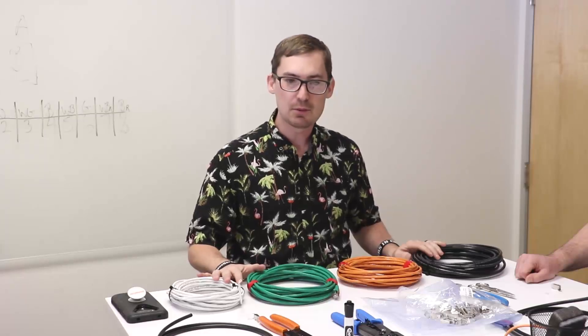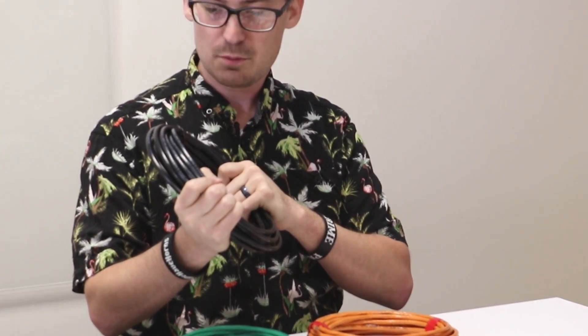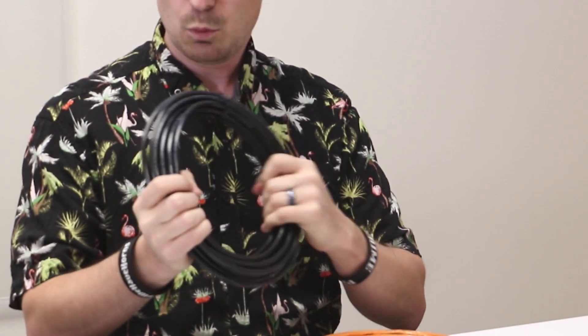First off, let's start with the different types of cabling here. We have Cat6 Shielded. It's thick with a nice plastic separator inside with a full wrapping.